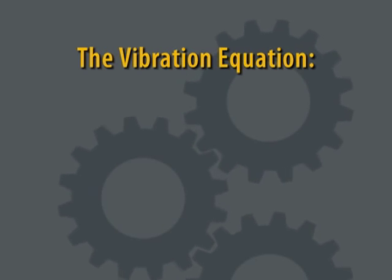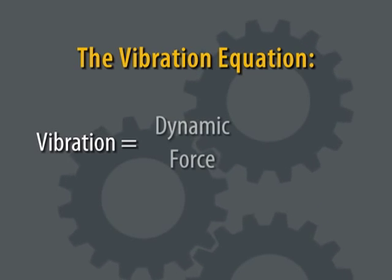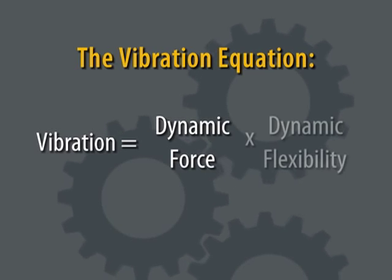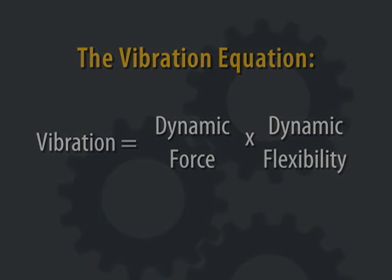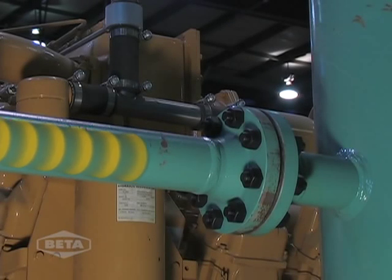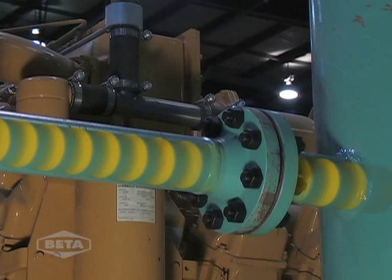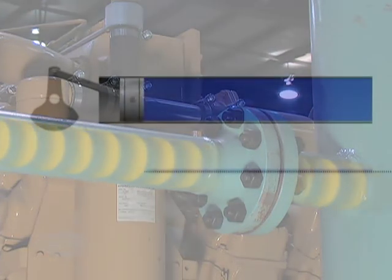These dynamic forces generate vibration as defined in the vibration equation. Vibration equals dynamic forces multiplied by dynamic flexibility. Pulsations are pressure waves created during the reciprocating motion of a compressor piston. Here's a simple example.